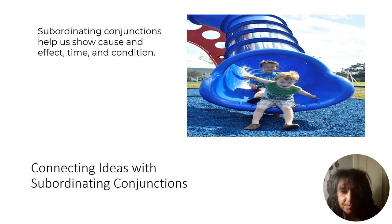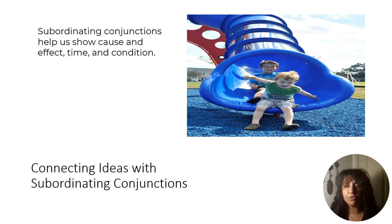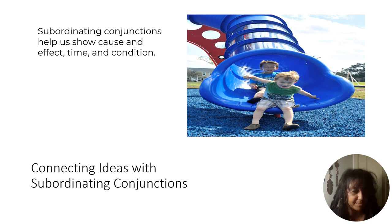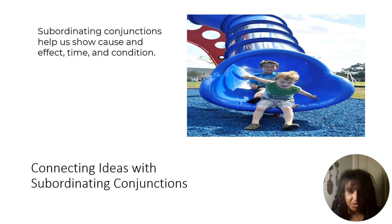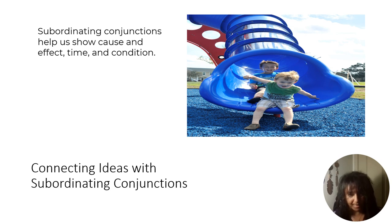Subordinating conjunctions help us show cause and effect, or time, or condition. It connects ideas but also has some sort of movement to it, which can sometimes be hard to recognize. For example, cause and effect means when one thing happens then another thing will happen. It can move time within a sentence, or tell us something happens because something else was about to happen.